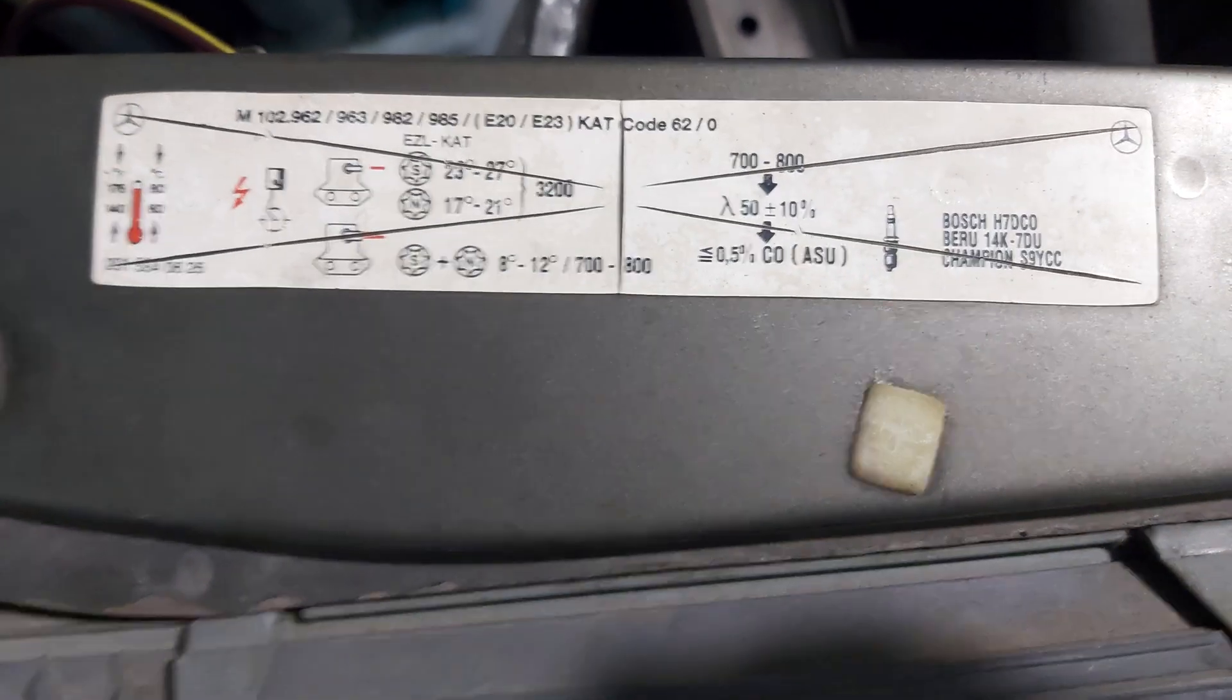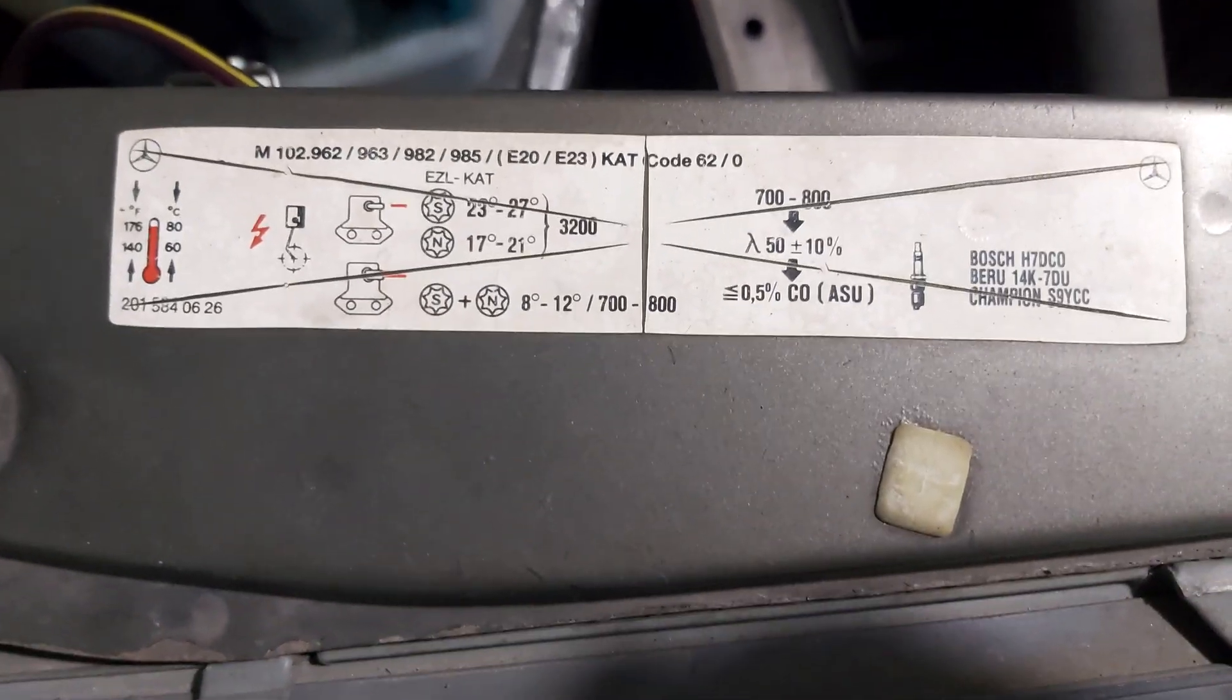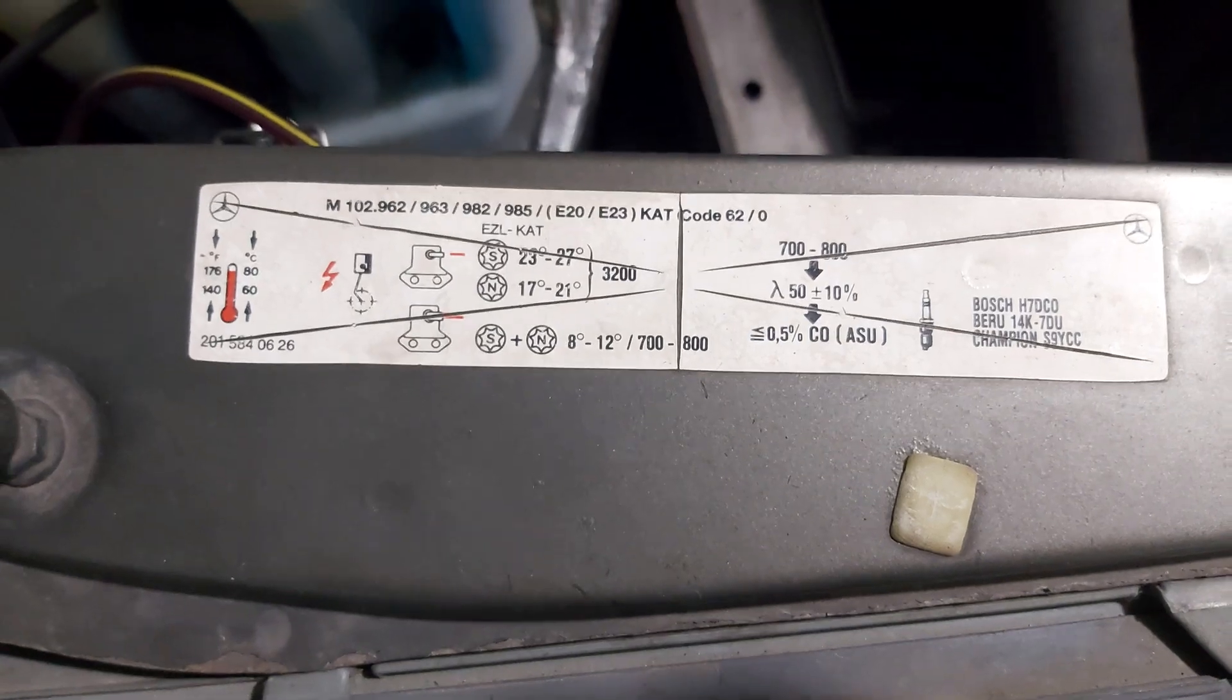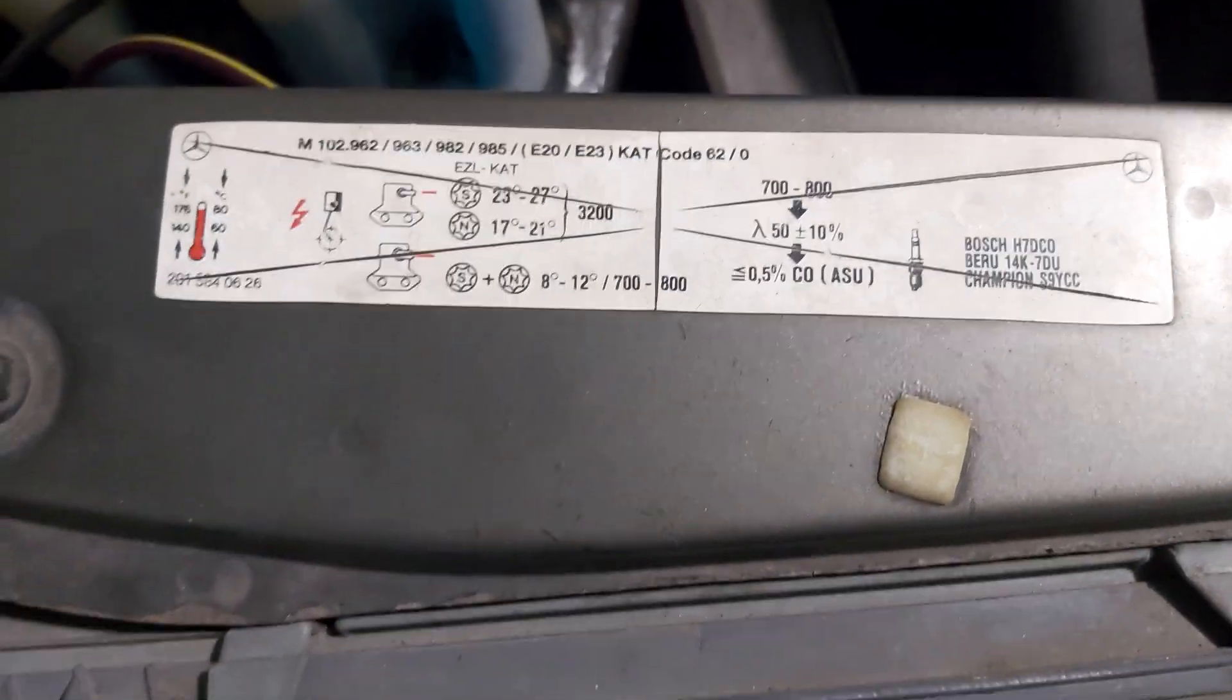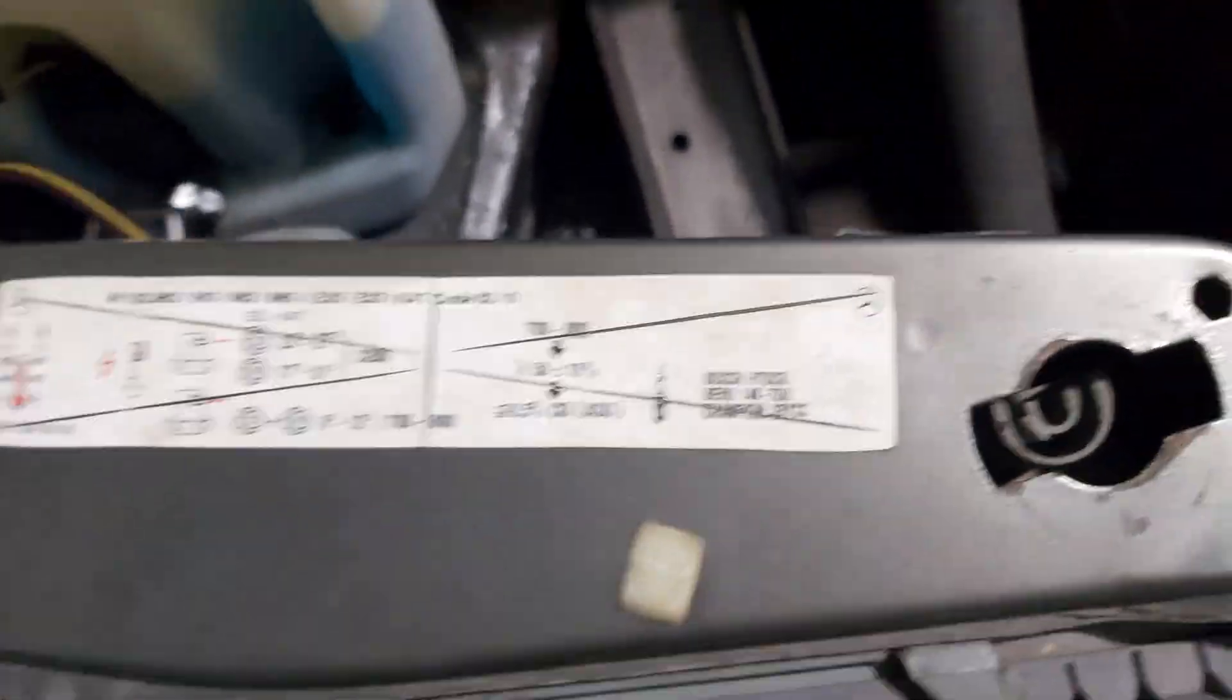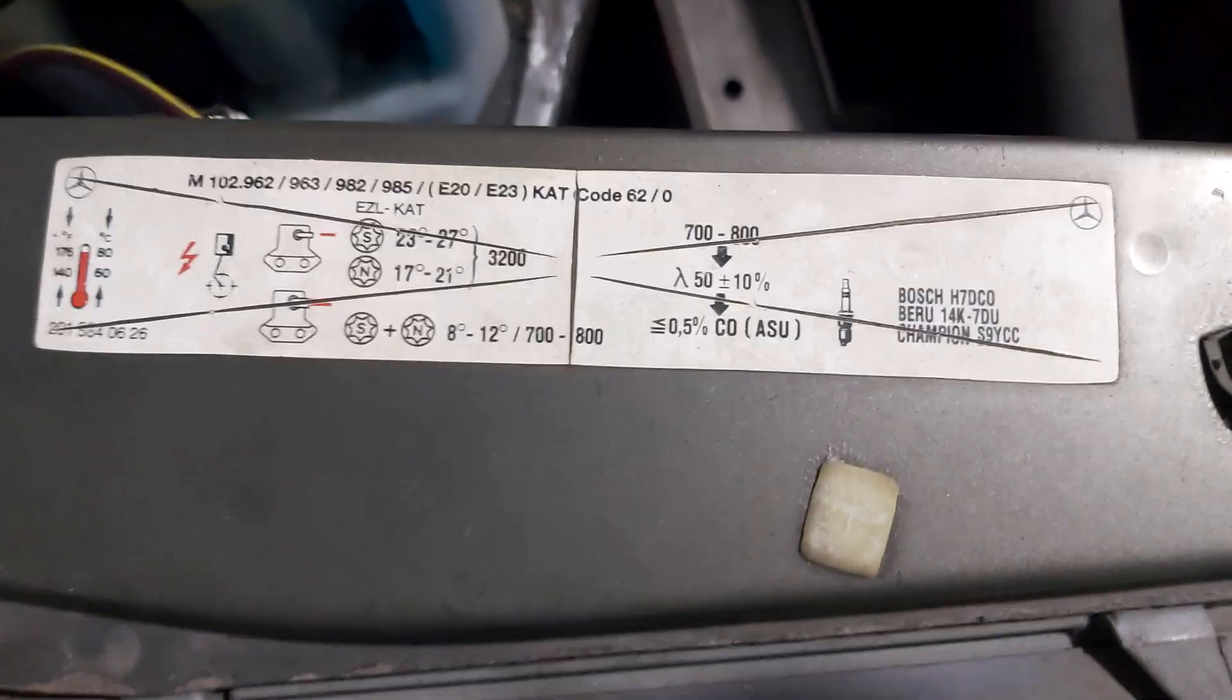Here it says less or equals to 0.5 percent CO. I doubt that you can get these numbers. ASU stands for German Abgas, which would be the emission of your exhaust gases. And the last thing but not least -